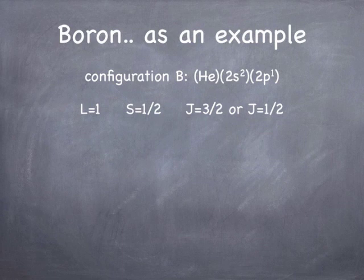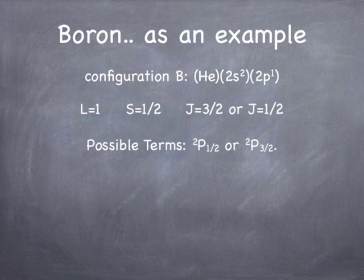So what are the possible terms? Well, if j is 3 halves and L is 1 and s is a half, then it would be a p state, since L is equal to 1, it would be a 2p state because s is a half, and it would either be 2p 3 halves or 2p 1 half. So those are the possible term symbols. So that's pretty easy. It's actually not that complicated. It gets a little more interesting when you have more than one electron, which we will in class today, but that's the basic idea.